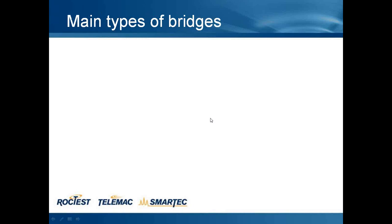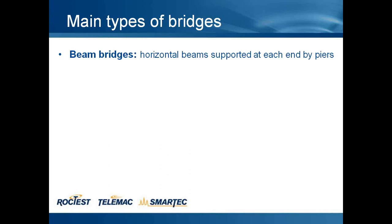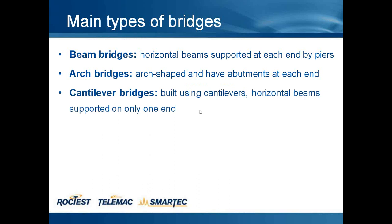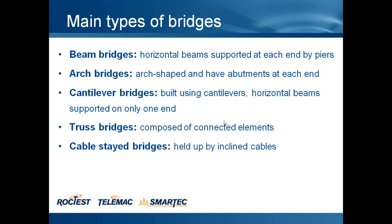Let's have a look at the different kinds of bridges. Usually we sort bridges into five or six main types. We have beam bridges, horizontal beams supported at each end by piers. Arch bridges are shaped and have abutments at each end. Cantilever bridges are built using cantilever horizontal beams supported on only one end. Truss bridges are composed of connected elements. Cable-stay bridges are held up by inclined cables.